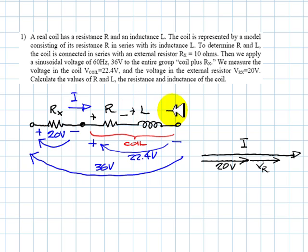And the voltage, this one, in the inductance of the coil, is going to be at 90 degrees leading the current. This is going to be the voltage in the inductive part of the coil.